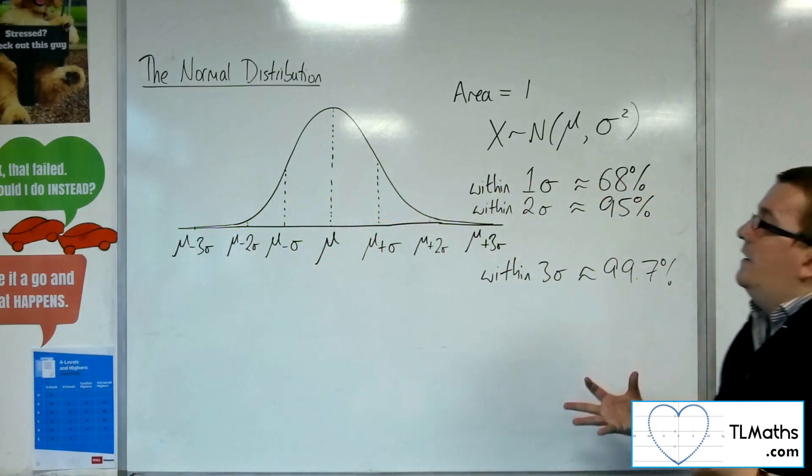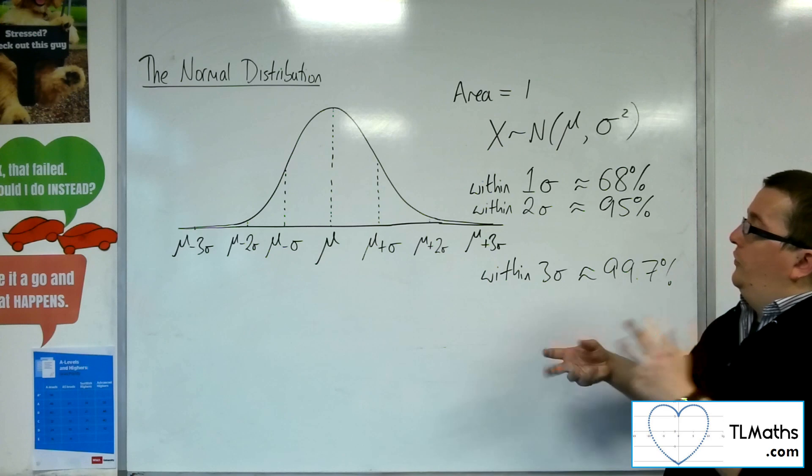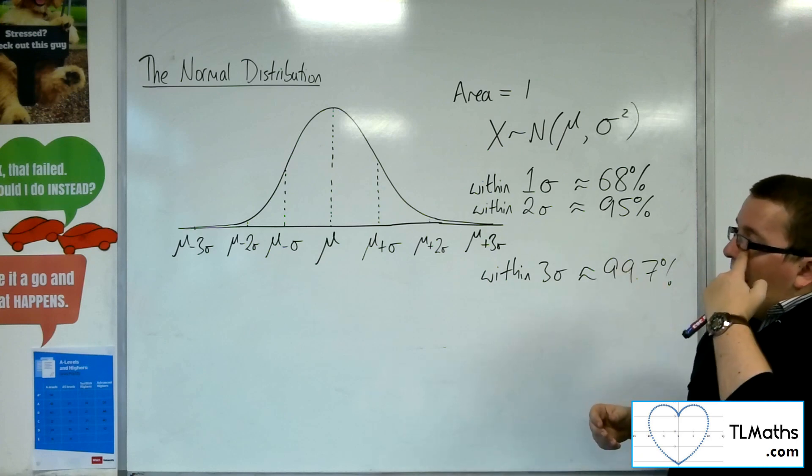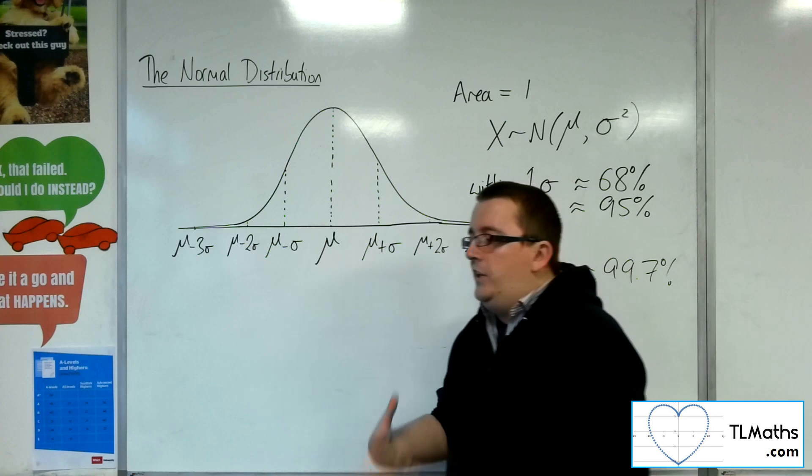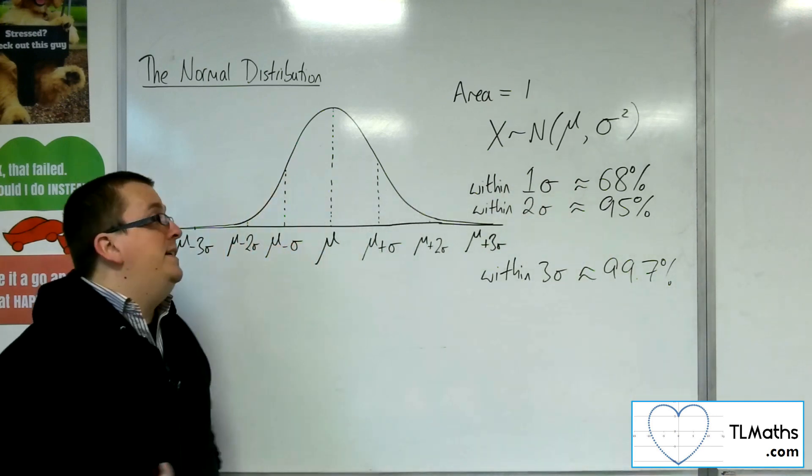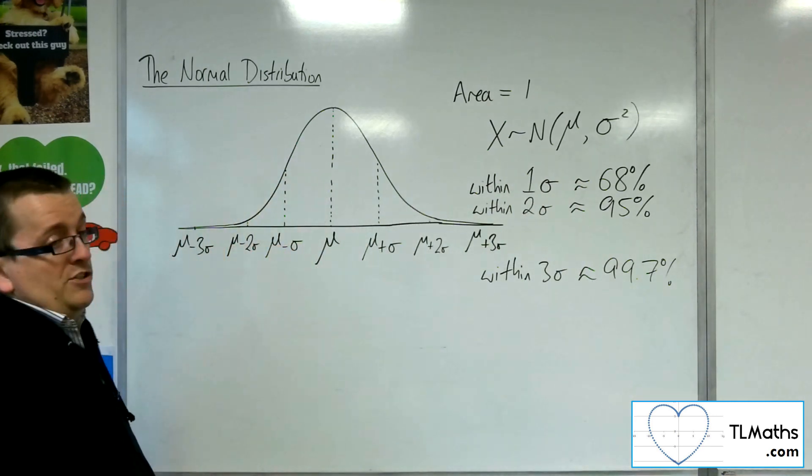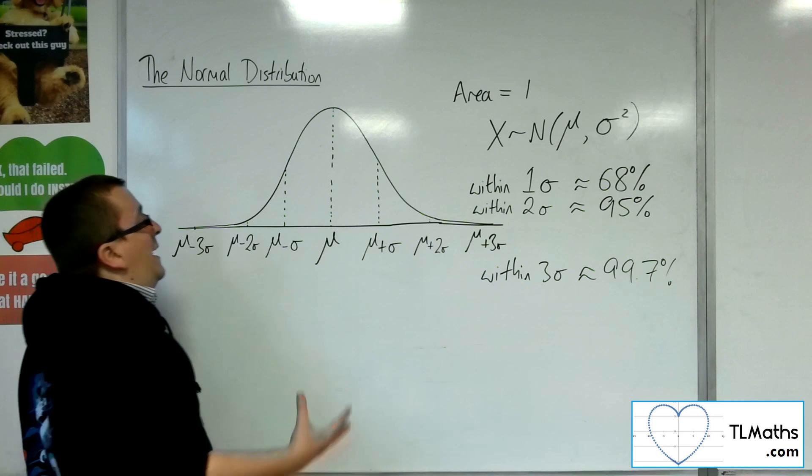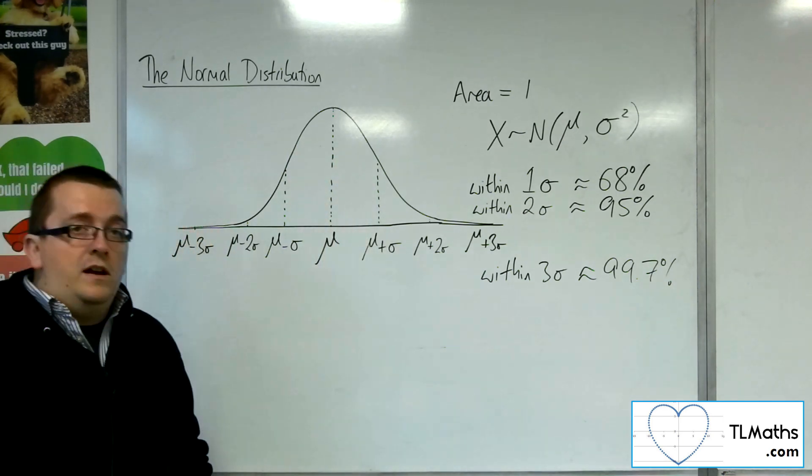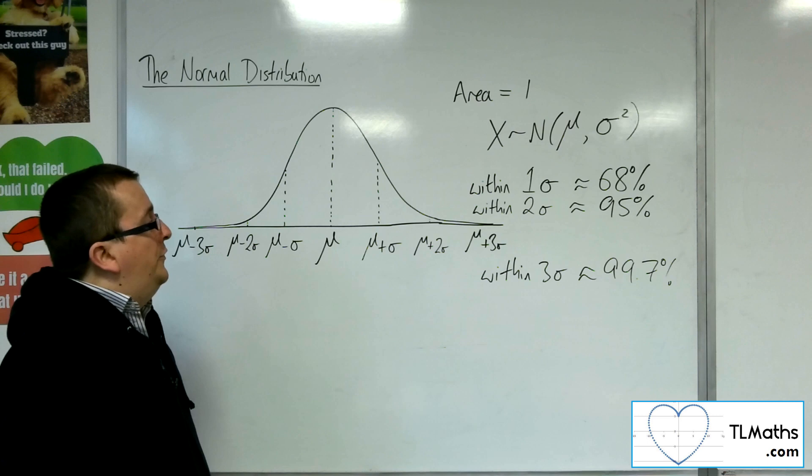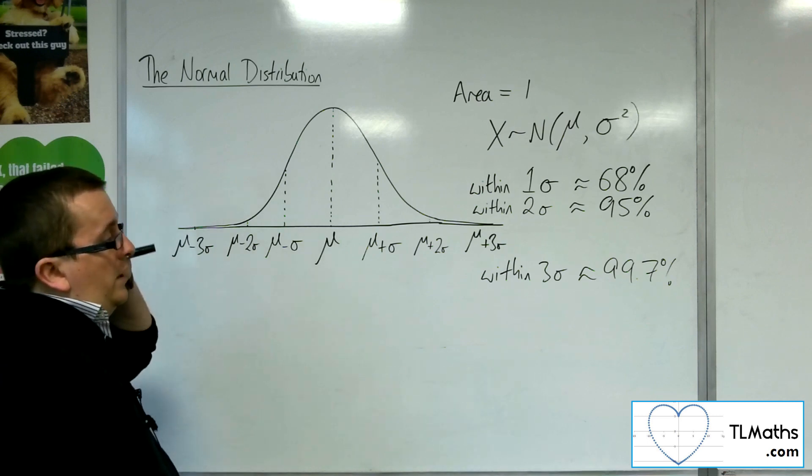Okay. So this is the bell curve. This is the normal distribution, how it is set up. And our job is to deal with problems that involve finding probabilities based on a normal distribution. So based on finding the areas of this curve, okay, so that's what we're going to be looking at in the next video.